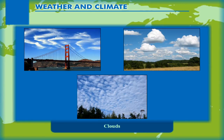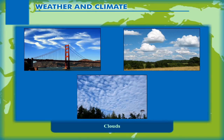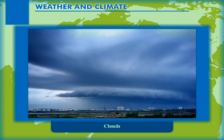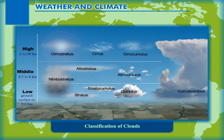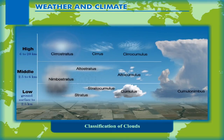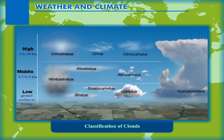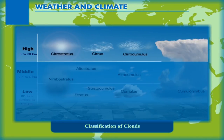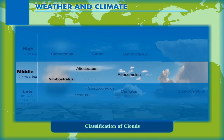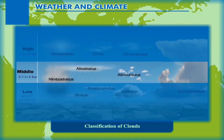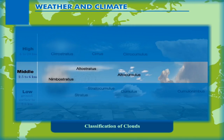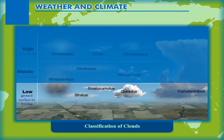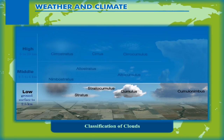Sharing the characteristics of these three basic types of clouds are various other types, classified into about 31 forms. The term Nimbus, if added to any cloud form, represents the rain-bearing clouds. Clouds are classified by height above the ground: high clouds (6 to 20 km) include Cirrus, Cirrocumulus and Cirrostratus; middle clouds (2.5 to 6 km) include Altostratus, Altocumulus and Nimbostratus; low clouds (ground surface to 2.5 km) include Stratocumulus, Stratus, Cumulus and Cumulonimbus.